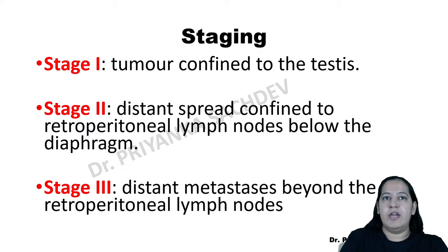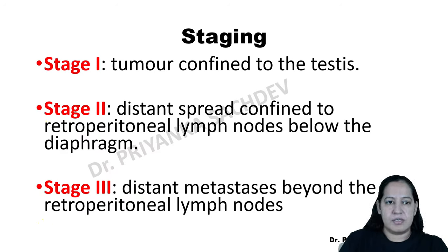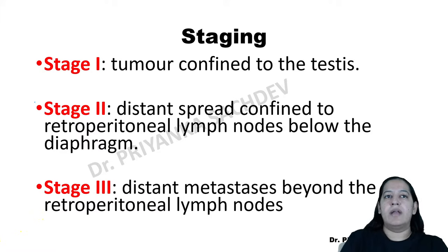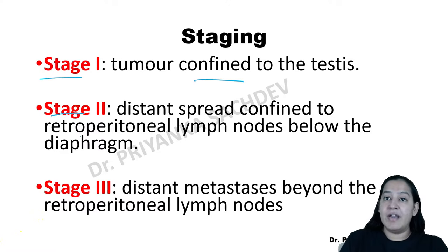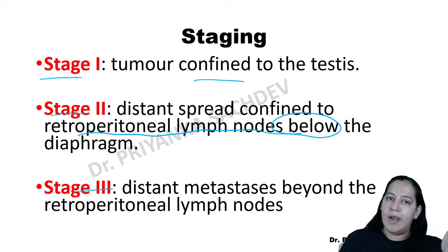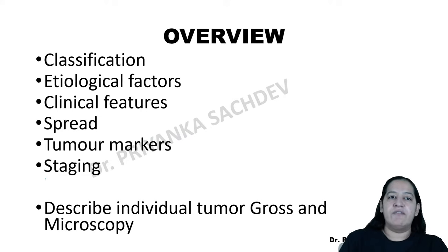Staging of testicular tumor: Stage 1 — tumor confined to the testis only. Stage 2 — tumor spreading to retroperitoneal lymph nodes below the diaphragm. Stage 3 — tumor spreading to lymph nodes both above and below the diaphragm. Stage 4 — distant metastasis. Staging is straightforward.